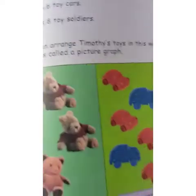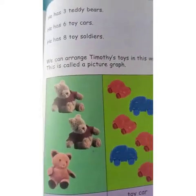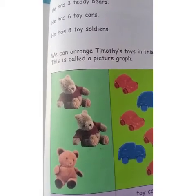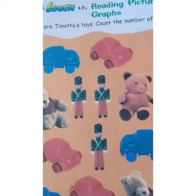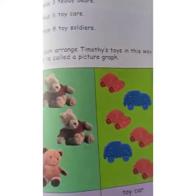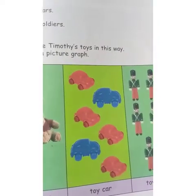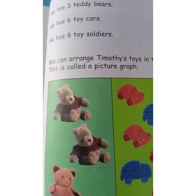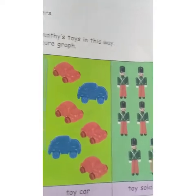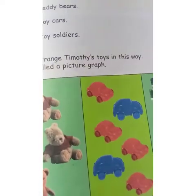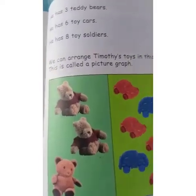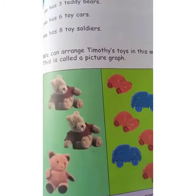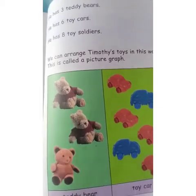Now look on page number 223. He has 3 teddy bears — we have sorted them into one column. Then he has 6 toy cars, sorted into one column. Then he has 8 toy soldiers. We can arrange Timothy's toys in this way. This is called a picture graph — you arrange the same things into one column.